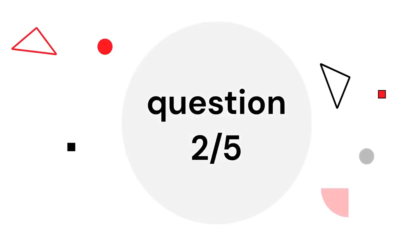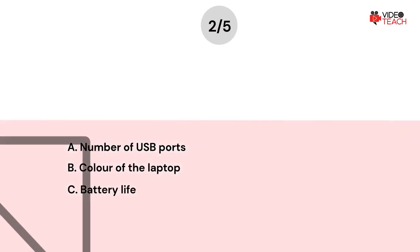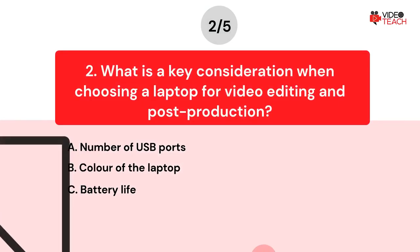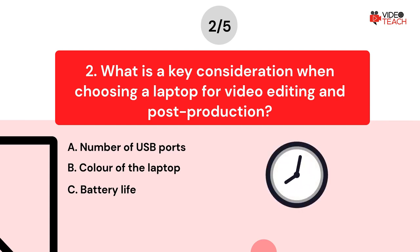Question number two. What is a key consideration when choosing a laptop for video editing and post-production? Option A: Number of USB ports. Option B: Color of the laptop. Option C: Battery life. Now you have about 15 seconds to think about your answer.